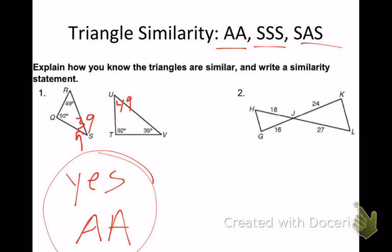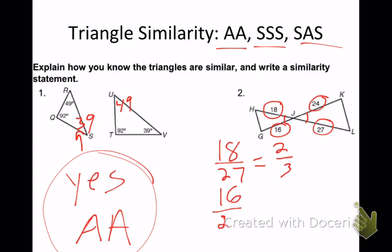Number two only gives me a couple sides. But I do know something else. What else do I know, Reed? Those are vertical angles. We have vertical angles right here in the middle. So let's look at the sides here. 18 over 27, what's that simplify to? Two-thirds. What about 16 over 24? That simplifies to two-thirds as well. Are they proportional? Are the angles the same? Yes. And what reason is it? Side, angle, side. Nice job.